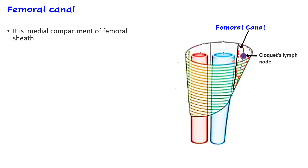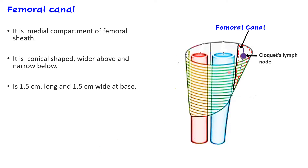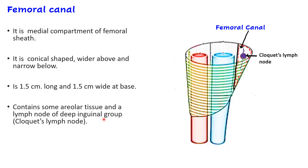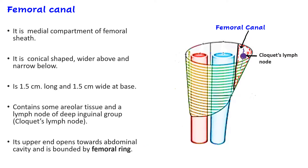The femoral canal is the medial compartment of the femoral sheath, conical in shape, wider above and narrow below. Its length is approximately 1.5 centimeters and its width at the top is also approximately 1.5 centimeters. It contains areolar tissue and the Cloquet or Rosenmüller lymph node, which drains the glans penis in males and the clitoris in females. Its upper end is known as the femoral ring, which communicates with the abdominal cavity.